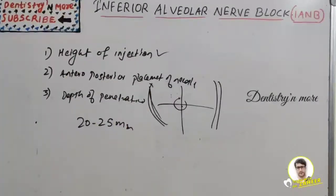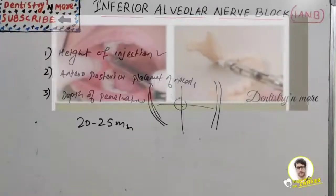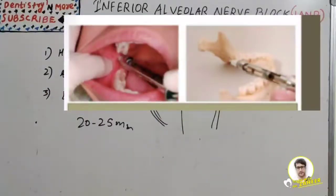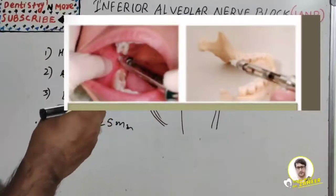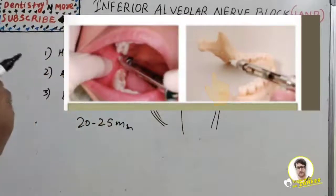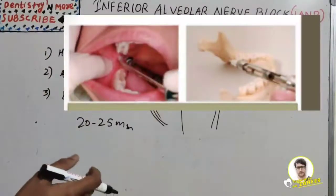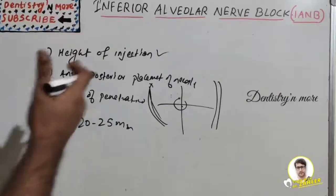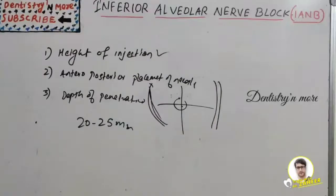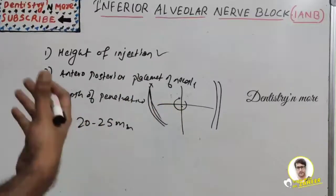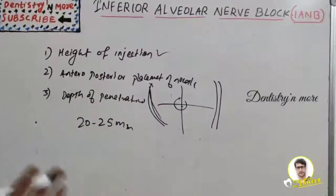If bone is not contacted at all, the needle tip is located too far posteriorly. To correct this, withdraw the needle slightly — leaving approximately one-fourth of its length in tissue — and reposition the syringe barrel more posteriorly over the mandibular molars, then continue insertion until contact with bone is made at the appropriate depth of 20 to 25 millimeters.